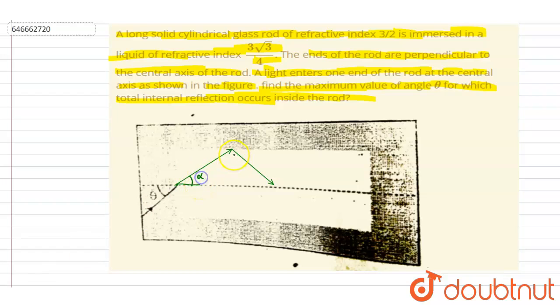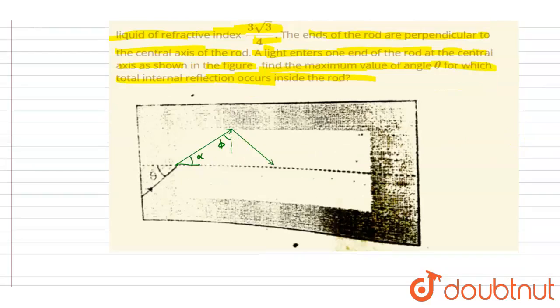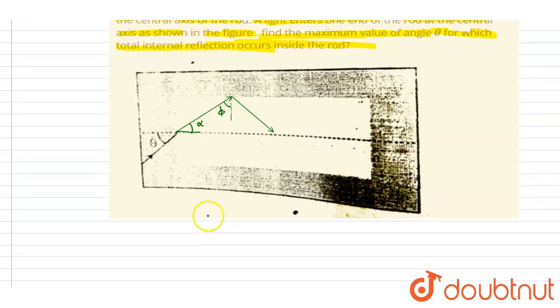So if you see, let's say this angle is α and this angle is φ. So for total internal reflection to take place, this φ should be more than critical angle.